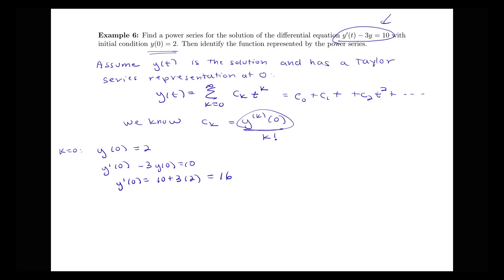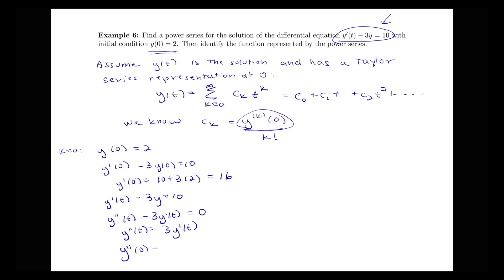For the second derivative, notice that y'(t) minus 3y equals 10. If we take the derivative of both sides, we get y''(t) minus 3y'(t) equals 0. So y''(t) equals 3 times y'(t). Therefore, the second derivative evaluated at 0 equals 3 times the first derivative evaluated at 0, and we knew y'(0) was 16, giving us y''(0) equals 48.